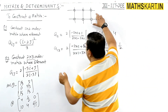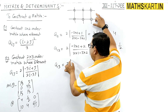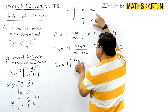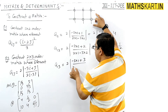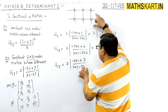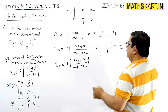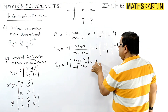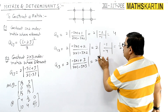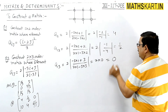For A13, put i=1, j=3: 2 times of (minus 3×1 plus 3) divided by (2×1 minus 3×3). The numerator is 2×(0) = 0. So A13 = 0.